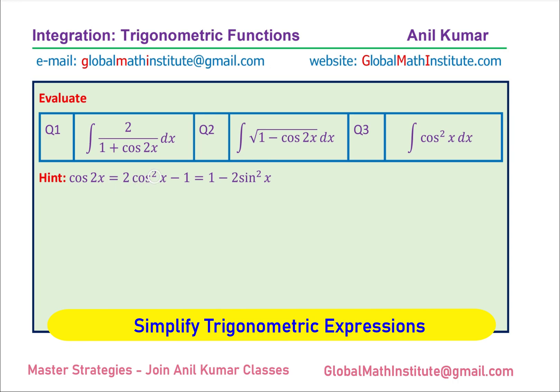cos2x equals 2cos²x minus 1, and is also equal to 1 minus 2sin²x. This is a very important formula and you will use it many times while integrating functions which involve trigonometric functions. You can simplify the given expressions in all three cases using this double angle formula and then integrate them.